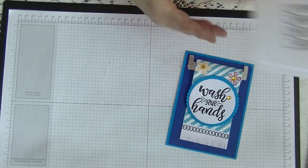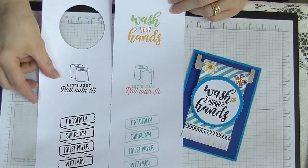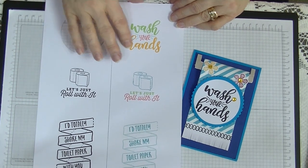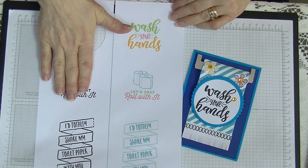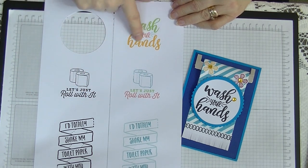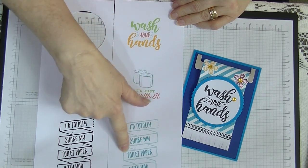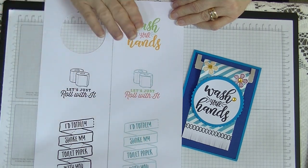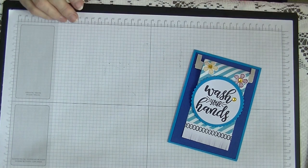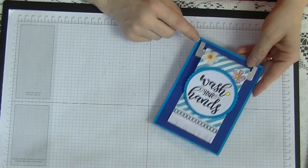Now the sheet that this comes off, I've already cut this out, as you can see. It comes as one sheet, and it comes with it coloured on one side and black and white on the other, so it says Wash Your Hands. Let's just roll with it. I'd totally share my toilet paper with you. That's one of the other sheets from that set that I've been using. I'd like to show you what we need to do to make this card.